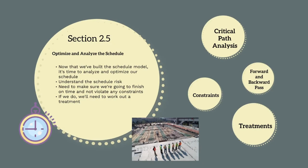Welcome to section 2.5, optimising and analysing the schedule. So far we've built this schedule model that captures all the work we have to do, when we need to do it and the order it needs to be done in. Now we need to analyse and optimise the model. We need to understand the critical path, the risk in the schedule, and make sure we're not going to violate any constraints. In some instances we'll need to apply treatments and alter our delivery methodology to achieve the project time requirements.